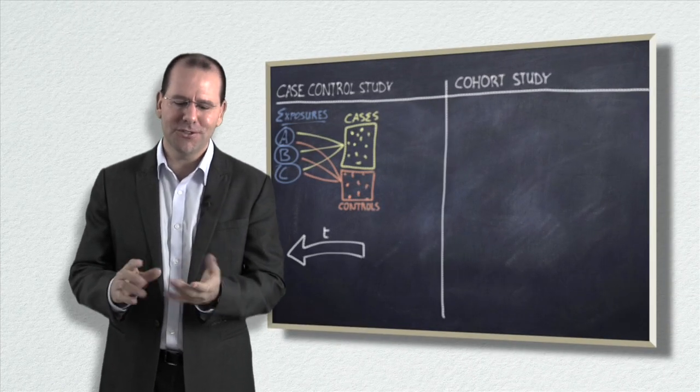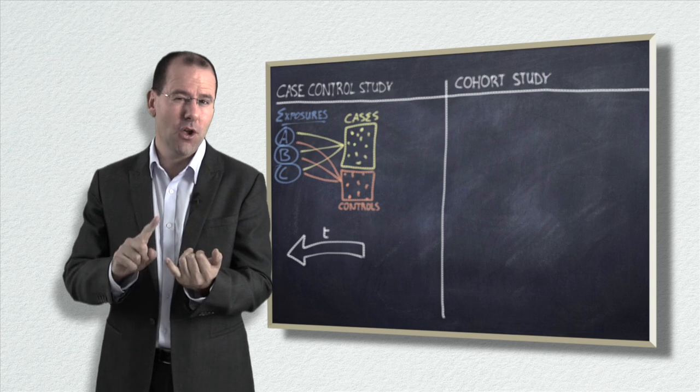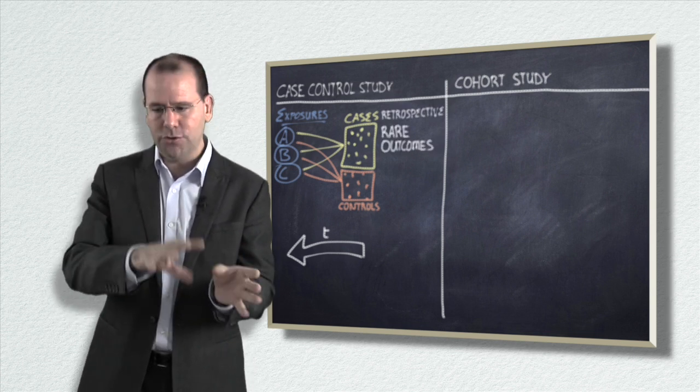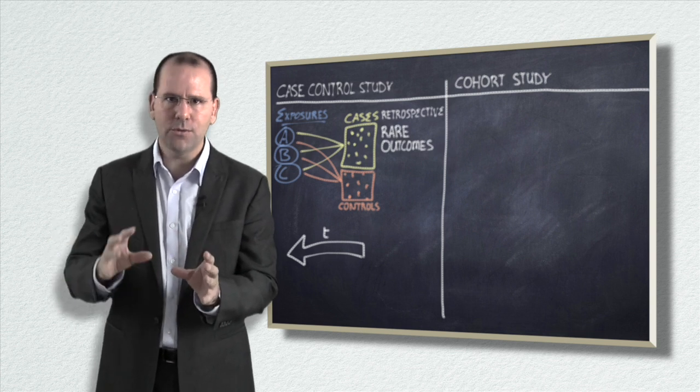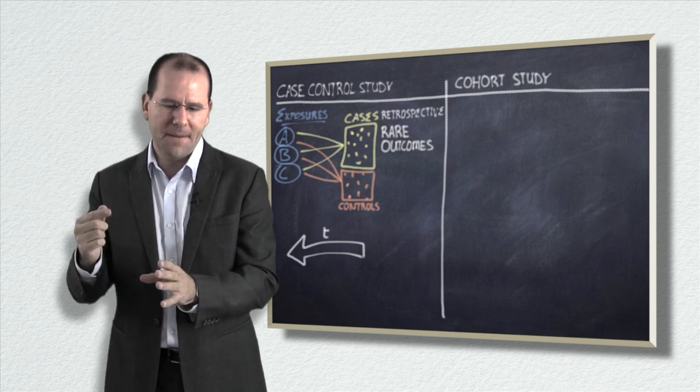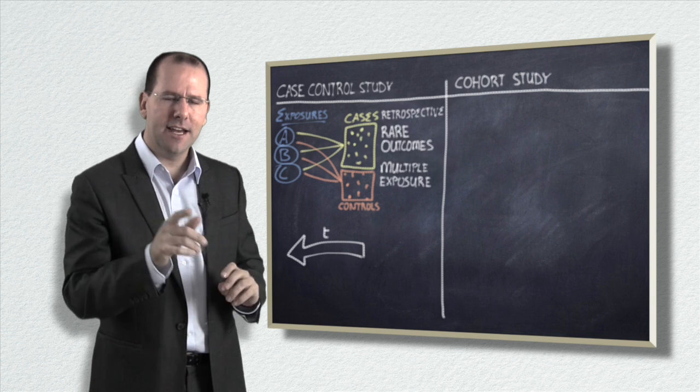So to summarize your case control study, you've got a group of cases and controls. You're looking back in time, so it's retrospective. You can use rare outcomes. So you're looking at an outcome and then looking backwards. That's important because when we talk about cohort studies, it's the opposite way around. So you're looking at rare outcomes, you're looking backwards in time, so it's retrospective. You're talking about looking at multiple exposures.